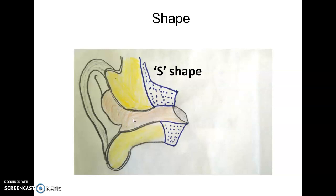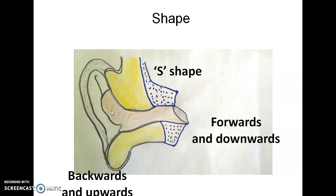In this S-shape, the outer portion of the canal is directed upwards and backwards, while the inner portion is directed downwards and forwards. If you take the S and stand it upright, the shape becomes clear. So the outer portion is backwards and upwards, and the inner portion is forwards and downwards.